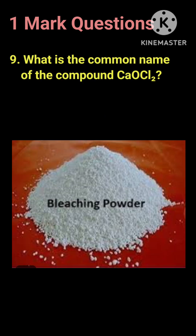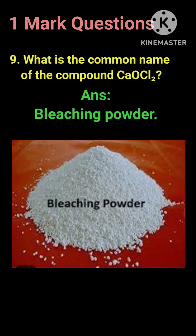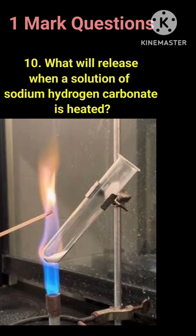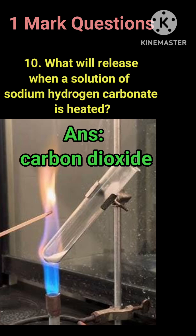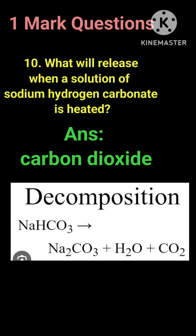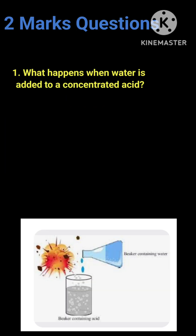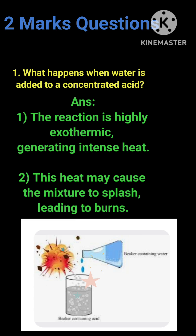Question 9: What is the common name of the compound CaOCl₂? Answer: Bleaching powder. Question 10: Which gas will be released if a solution of sodium hydrogen carbonate is heated? Answer: Carbon dioxide. Two-mark questions. Question 1: What happens when water is added to a concentrated acid?